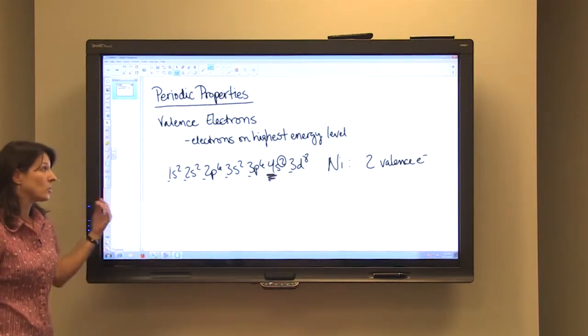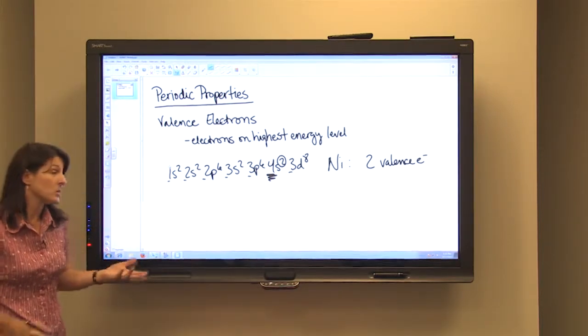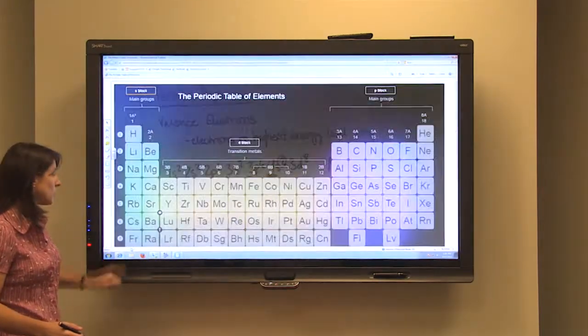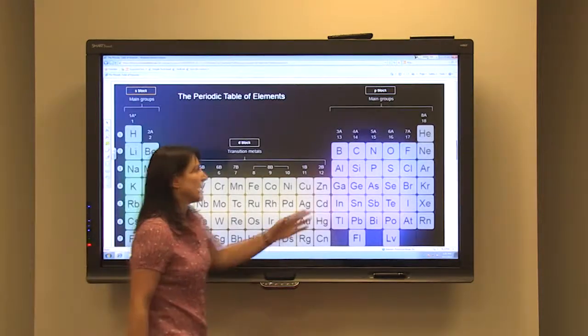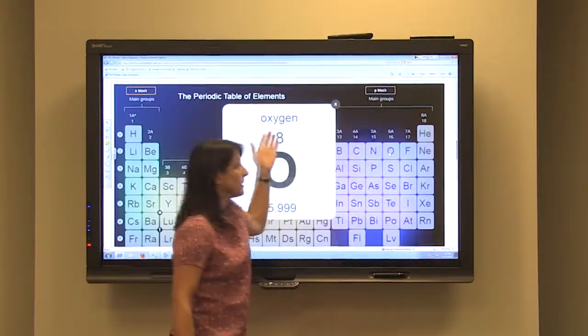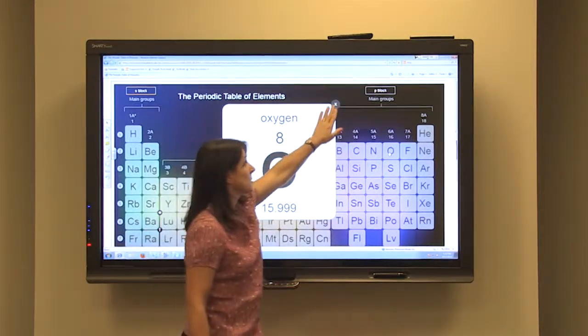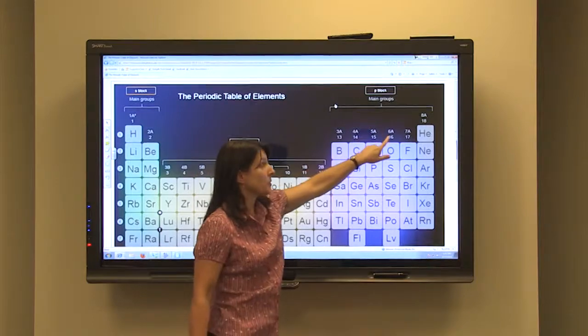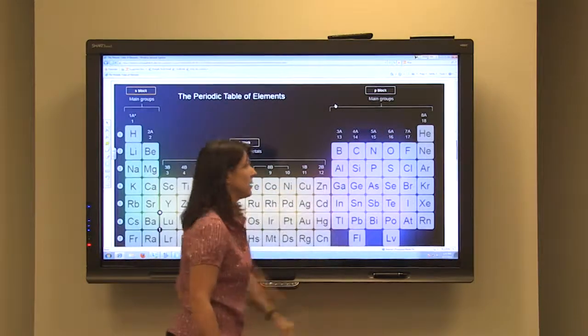Using electron configurations will work for the representative elements as well. If you want to choose an element from the periodic table, like oxygen. Oxygen has 8 total electrons. Based on its group number, we would expect it to have 6 valence electrons.